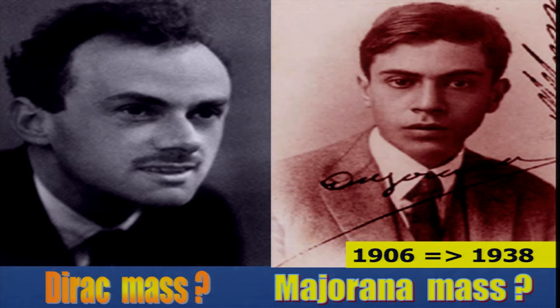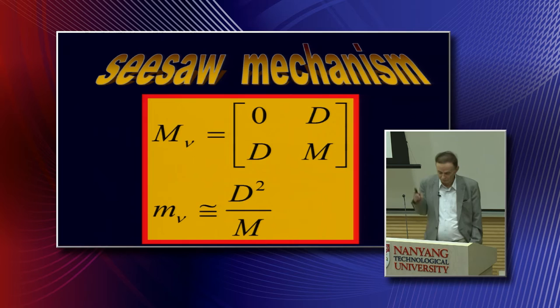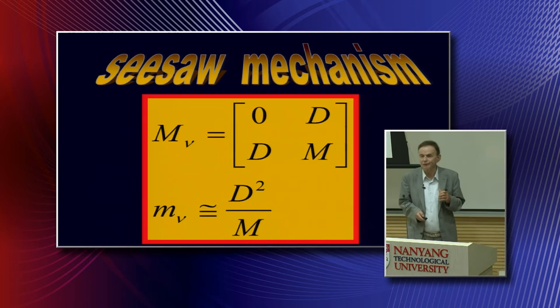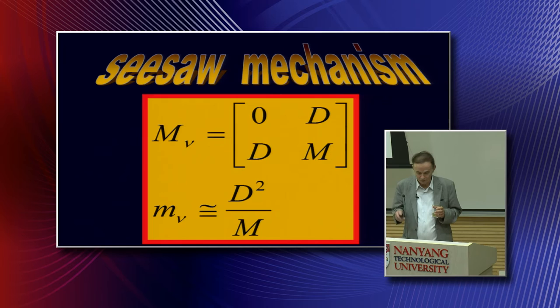And that has been used by the seesaw mechanism. In the seesaw mechanism, you assume, again, a texture-zero in the mass matrix. Here are the Dirac mass terms. This is a Majorana mass term, which is supposed to be then quite big. And then you can calculate the mass for the neutrino. It's just given by the determinant, just a square of the Dirac mass term divided by the Majorana mass term. That was first introduced in a paper by Gell-Mann, Minkowski, and myself. But then only in the footnote, it was forgotten. And later on, Gell-Mann, Slansky, and Ramond, and also Yanagida published it.